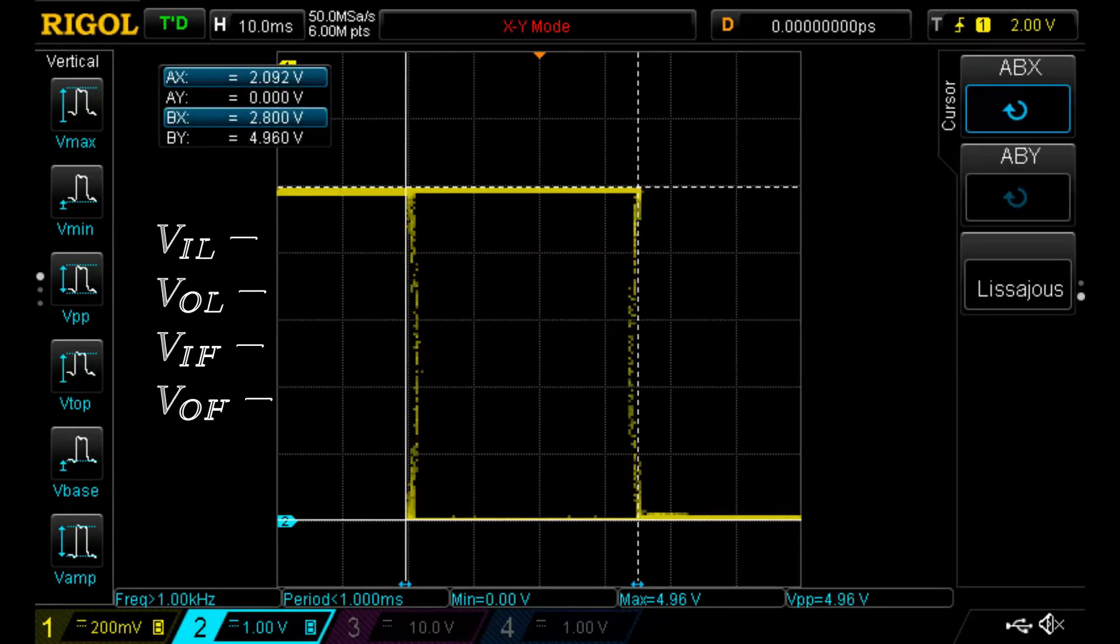I can use the oscilloscope cursors to measure the voltages at the trigger points. I'll be using these numbers later in the calculations for the oscillator.